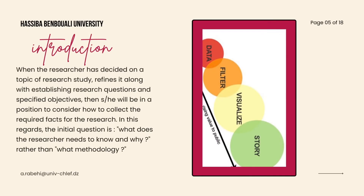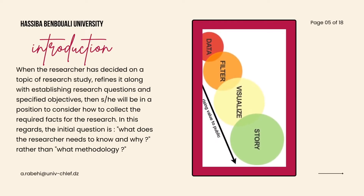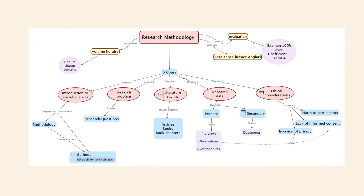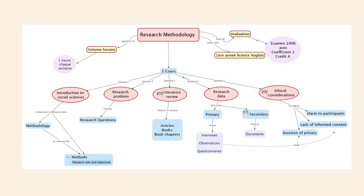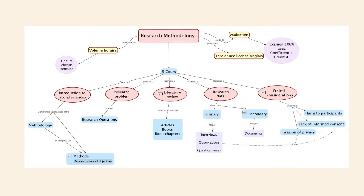Many would assume that after deciding on the topic of the research, refining the research questions, and setting clearly the objectives of the study, researchers would wonder about the methodology they're going to use. Well, this is not the case, because what actually happens is researchers asking: what do I need to know and why, instead of the how. As you can see in this mind map, research data is the fourth step in the process of conducting research, which means that although thinking about data starts in the earliest stages, collecting data and going to the field does not start until after writing the literature review.